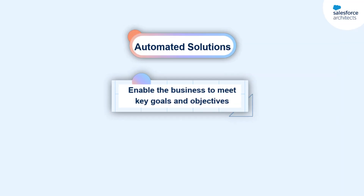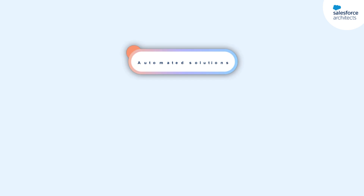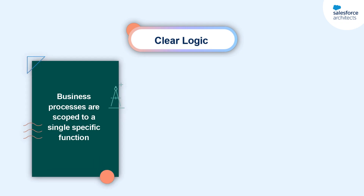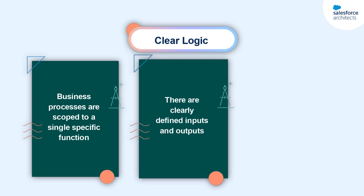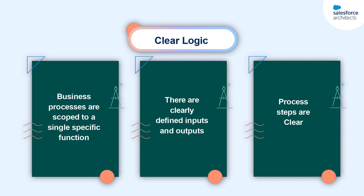Unlike my Taylor Swift fan club membership process, automated solutions enable the business to meet key goals and objectives faster and at scale. First and foremost, an automated solution has clear logic. You can tell an automation has clear logic when the business processes you're trying to automate are scoped to a single specific function, when there are clearly defined inputs and outputs, and when the process steps themselves are clear.